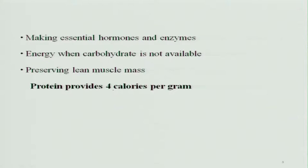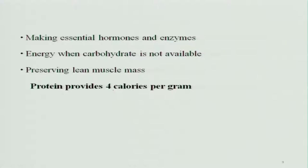Protein is also required for making hormones and enzymes, because all hormones and enzymes are protein in nature. These hormones are very important for the body and they maintain the body, while enzymes are required for various reactions in the body. Protein also provides energy when carbohydrate is not available — during starvation, when there is no energy supply in the form of carbohydrate or fat, the body releases energy from proteins.